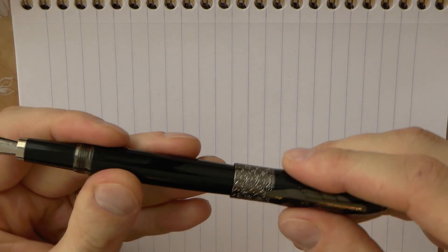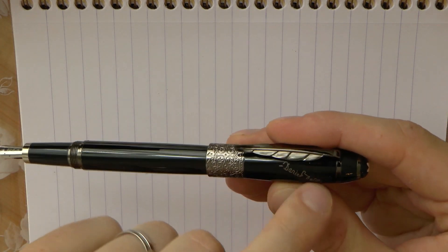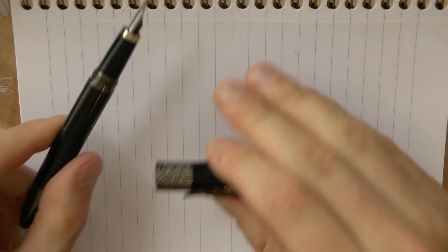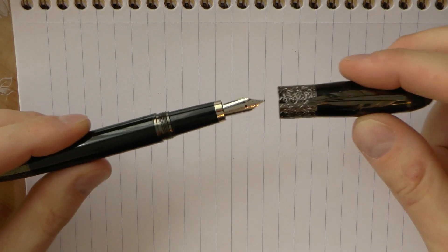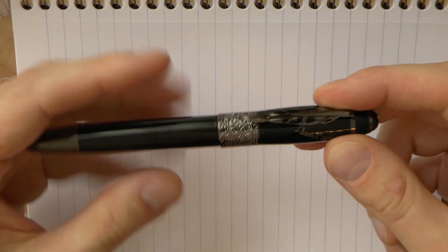Nib is marked Montblanc 18 carat 750 annual edition and but fake. It's the markings are there but as far as I know and I could be wrong but I thought the Daniel Defoe was a resin pen and this is metal.